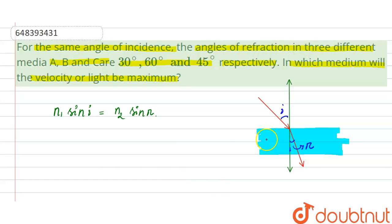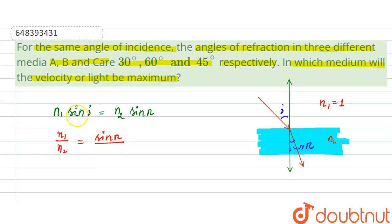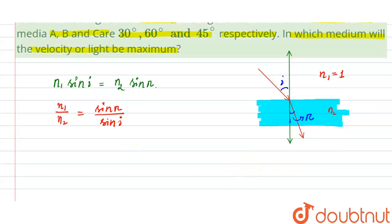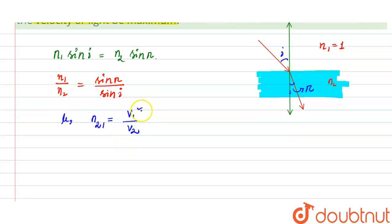In this question, we choose the second medium to be different in each case. Let medium 1 be n1 = air, and n2 be different for different media. From Snell's Law we get: n1 divided by n2 equals sin r divided by sin i. Another relation we have is that the relative refractive index of medium 2 with respect to medium 1 equals velocity in medium 1 divided by velocity in medium 2.